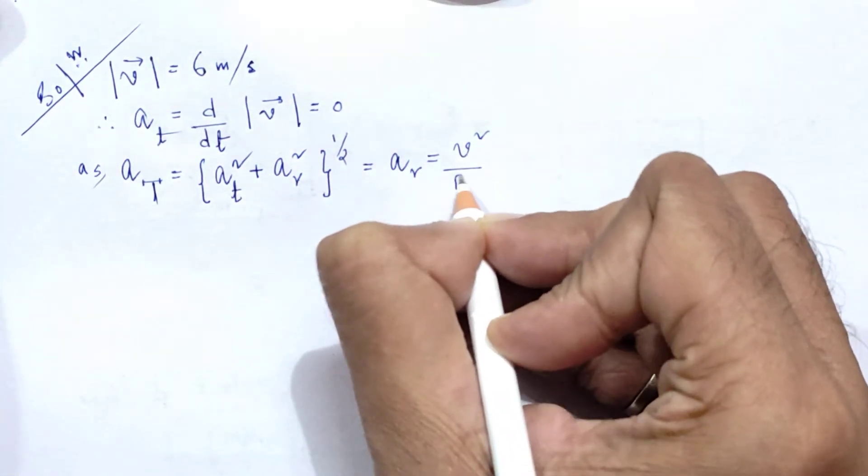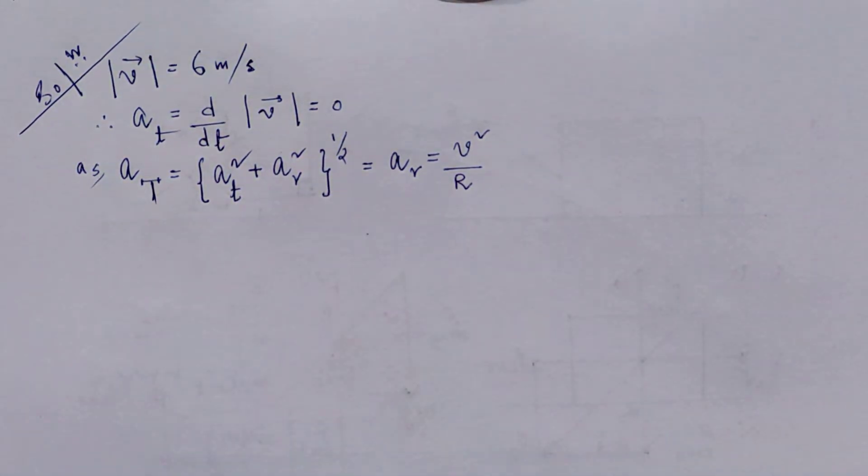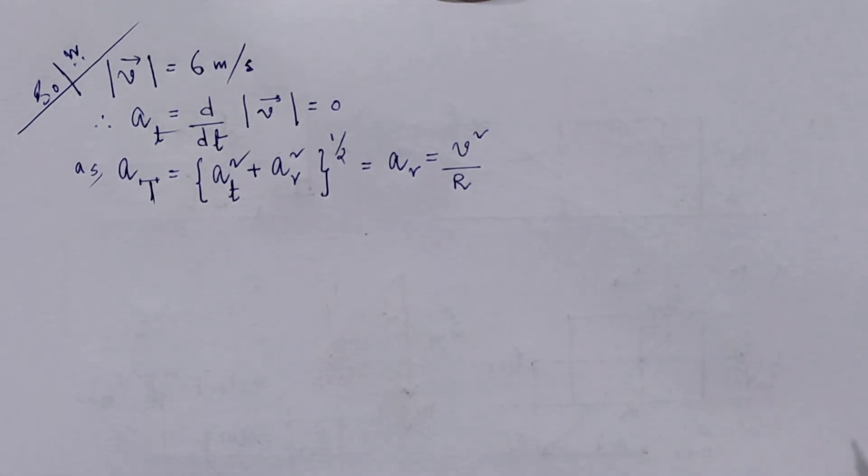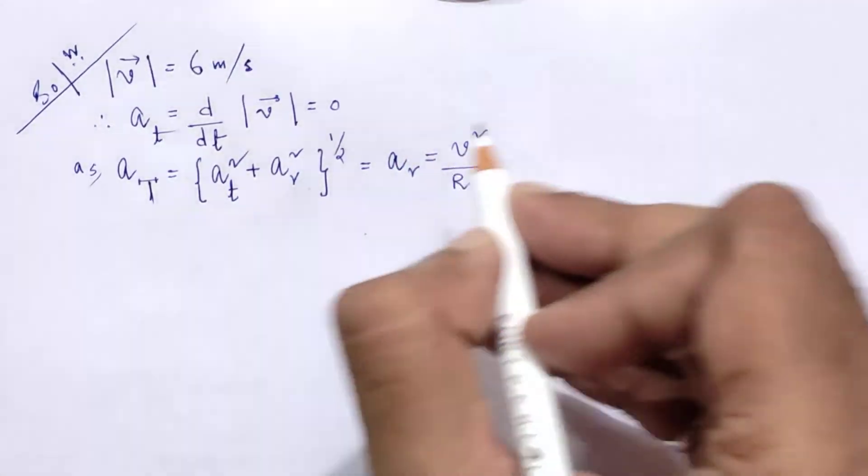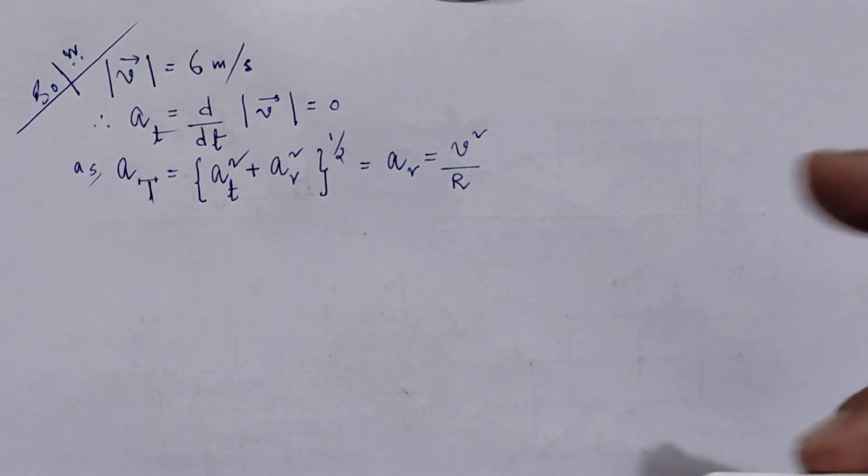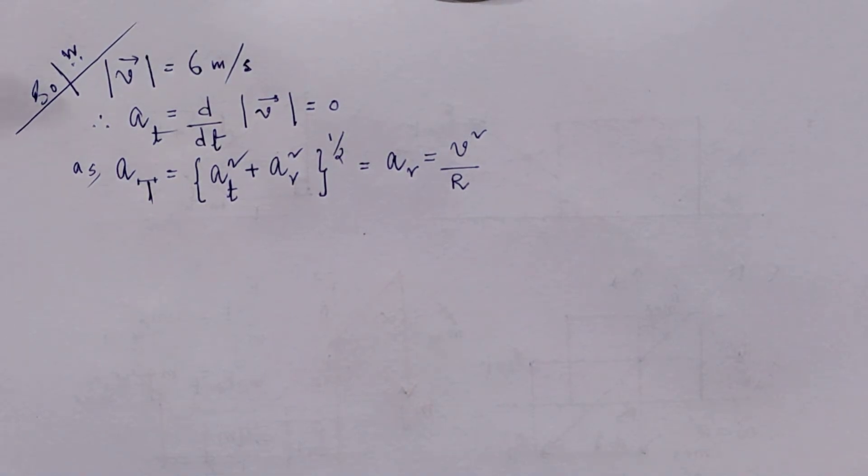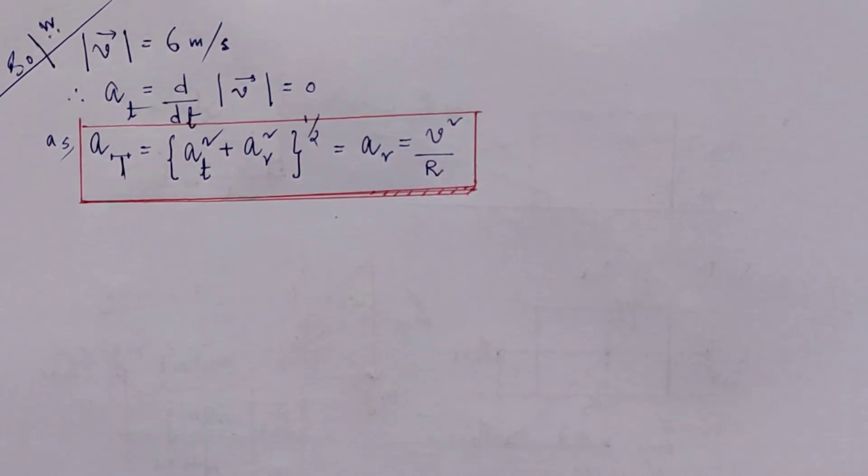This is a very important thing. So in this particular situation, the total acceleration of the system is equal to its radial acceleration, and this radial acceleration is nothing but v squared by the radius of this path at that particular point. We already know the core concept on radius of curvature.